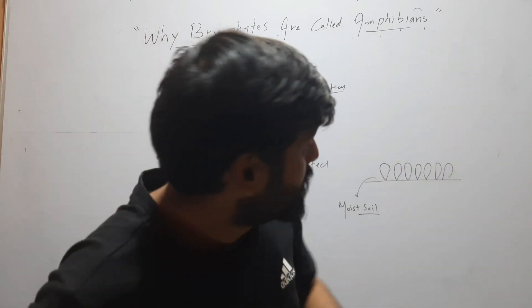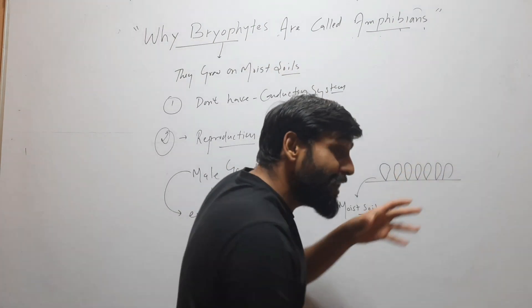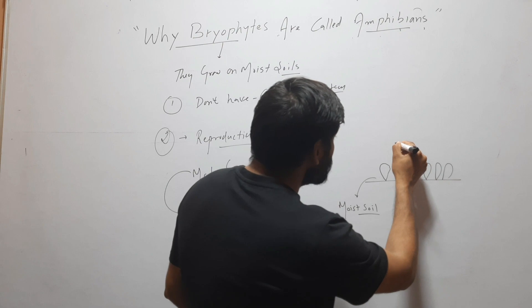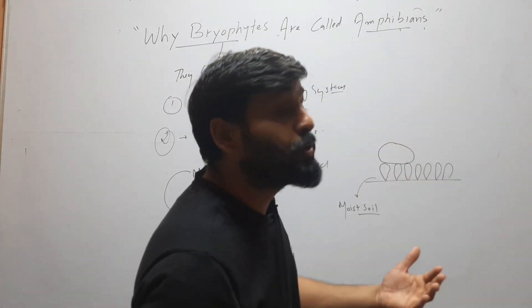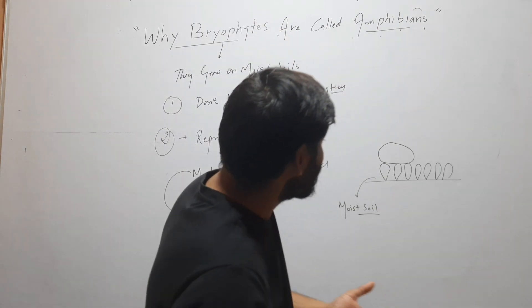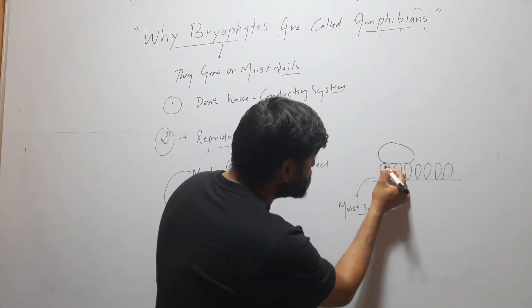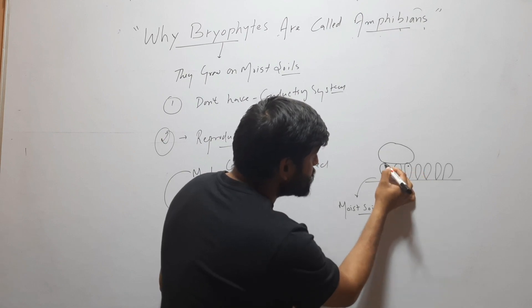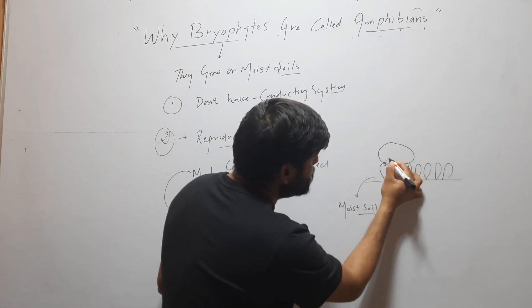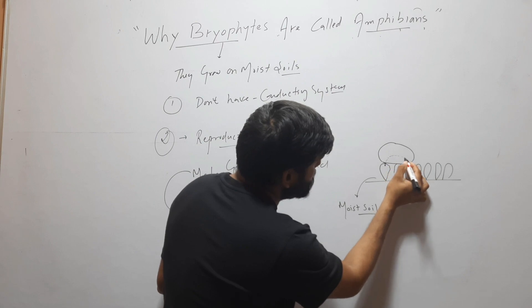So these dew drops are larger than plant. One dew drop can cover maybe five or ten plants, maybe two, three, four, five or ten plants. And this drop, suppose male gamete is here and egg is here, so this male gamete can swim in water through this drop and will reach there.